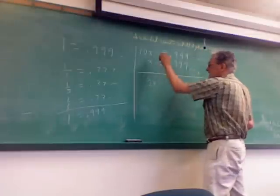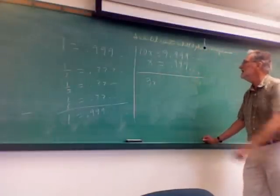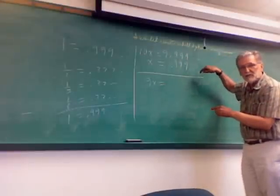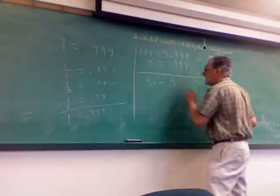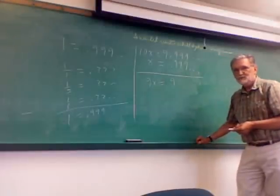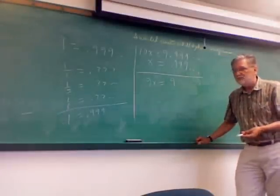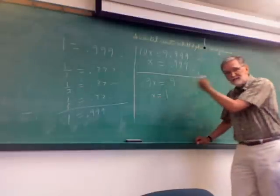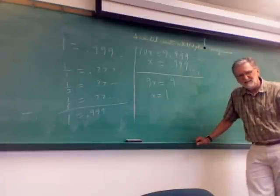And now when I subtract, I'll get 9X on the left, 10X minus X. And on the right, you notice all these nines after the decimal point will cancel when you subtract, so all you get is 9. So I got 9X equals 9. So that means dividing both sides by 9, X is 1. See, I told you it was 1.